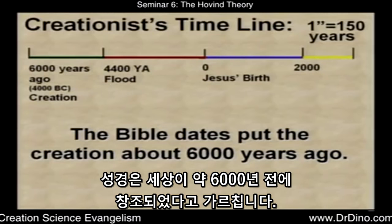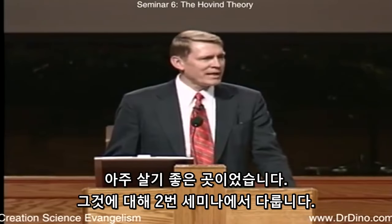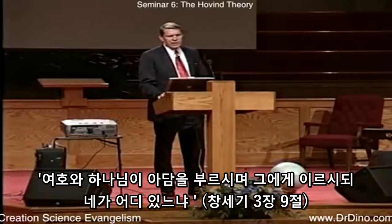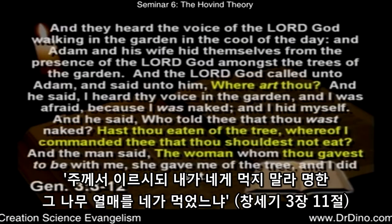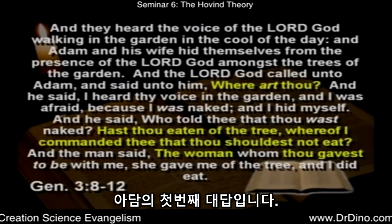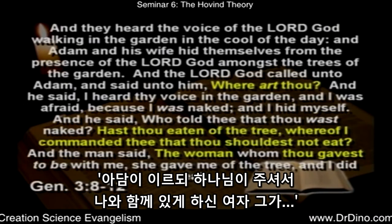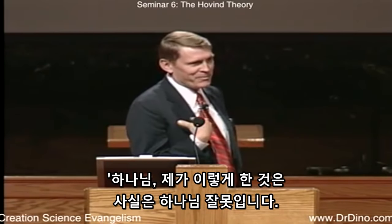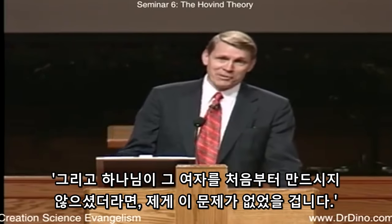The Bible teaches the world was created about 6,000 years ago with a perfect creation — dinosaurs lived with Adam and Eve. Then God put a curse on the ground because of their sin. The Lord asked Adam if he had eaten of the forbidden tree, and Adam's first response was to blame God and the woman: 'The woman that you gave me' — trying to pass the buck. Finally he confessed, 'Yes, I ate of the tree.' Then the woman blamed the serpent, and finally reluctantly confessed.